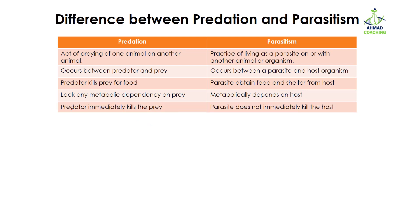In predation, predators immediately kill the prey and then eat it — they attack, kill, and eat it on the spot. In parasitism, the parasites do not immediately kill the host. They live inside or outside the body of the host, slowly obtaining their food, and in turn harming the host over a long period of time.